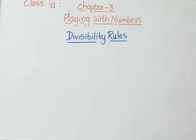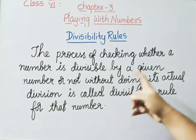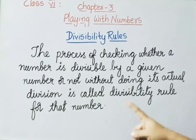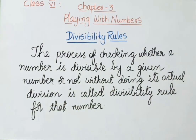Today I am going to explain chapter 3: playing with numbers — divisibility rules. The process of checking whether a number is divisible by a given number or not, without doing its actual division, is called the divisibility rule for that number. By observing the number only, we can say whether it is divisible by that particular number or not. Now let us learn all those divisibility rules.